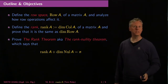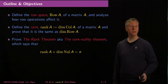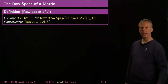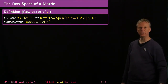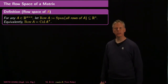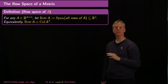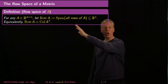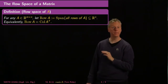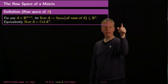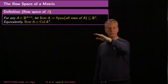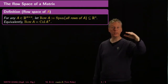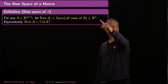These are two of the six great theorems of linear algebra, according to Gil Strang. Here's the definition of the row space of a matrix: for any m by n matrix, the row space of A is just the span of all the rows of A. Since it's an m by n matrix with m rows, each row is a vector of length n, so the row space lives inside R^n.